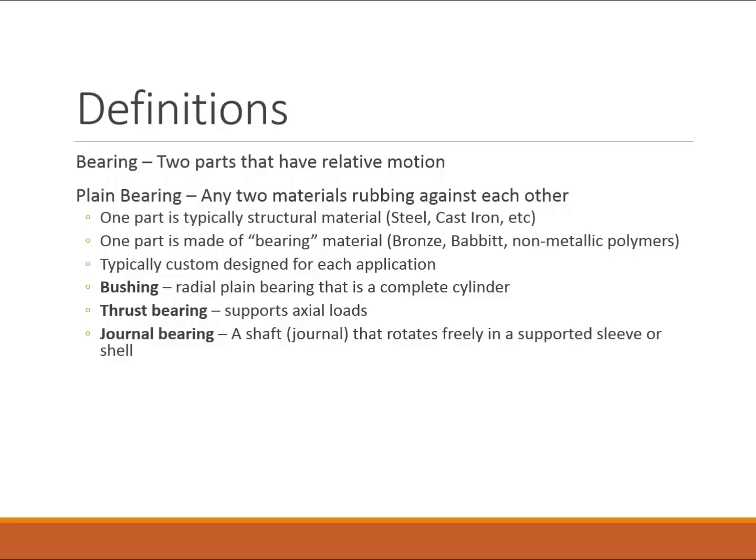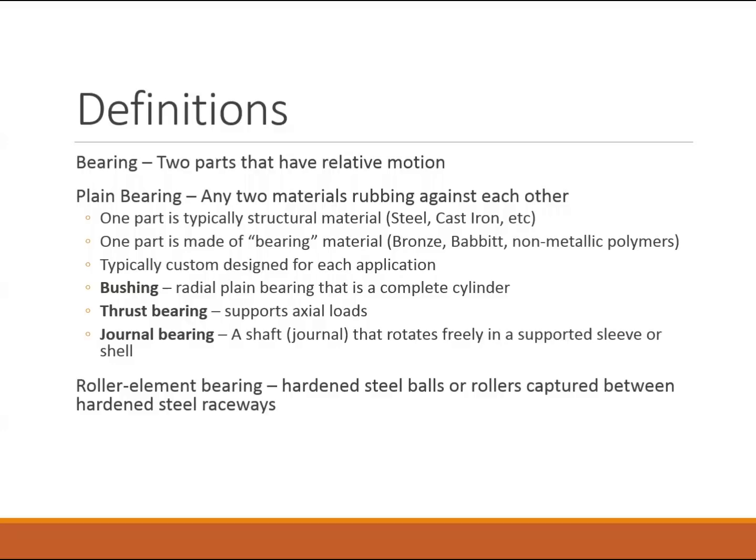Thrust bearings support axial loads entirely. Journal bearings are when a shaft rotates freely in a supported sleeve or shell — it may go all the way around to form a complete cylinder, but very often it doesn't. Very often, especially in journal bearings, there's some sort of lubrication occurring to allow the journal to rotate freely.